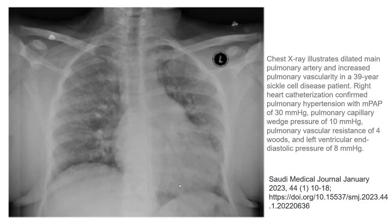Chest X-ray illustrates a dilated main pulmonary artery and increased pulmonary vascularity in a 39-year-old sickle cell disease patient. Right heart catheterization confirmed pulmonary hypertension with an MPAP of 30 mmHg, pulmonary capillary wedge pressure of 10 mmHg, and elevated pulmonary vascular resistance.